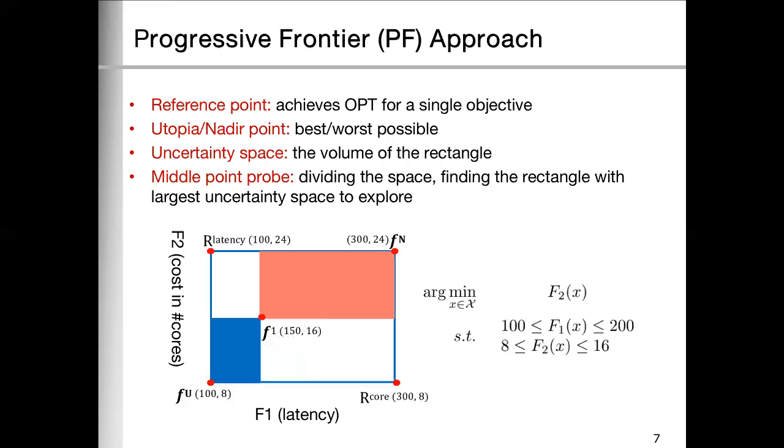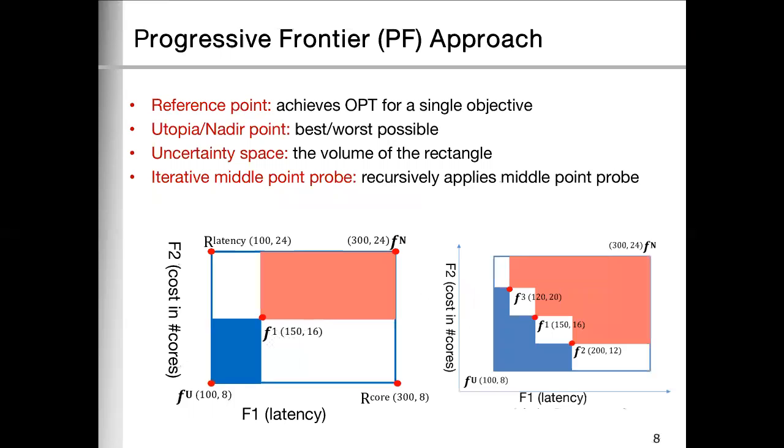After that, we can see that the points in the red part is dominated by F1 and the points in the blue part dominates F1. So these two parts can be safely disregarded. Then we check the volume, aka the uncertain space of the two white boxes, select the larger one to explore next. We can continue this procedure to find more points.